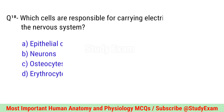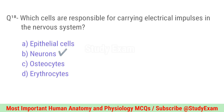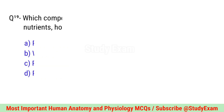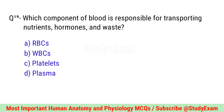Question number eighteen. Which cells are responsible for carrying electrical impulses in the nervous system? Correct option is B. Neurons.